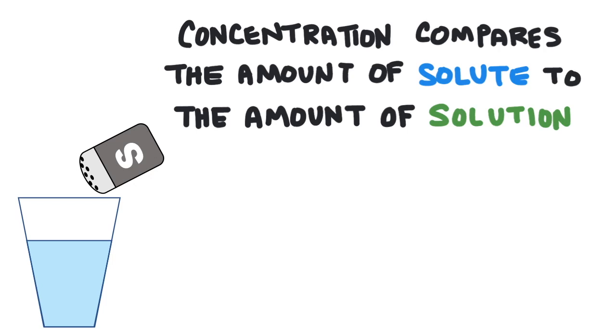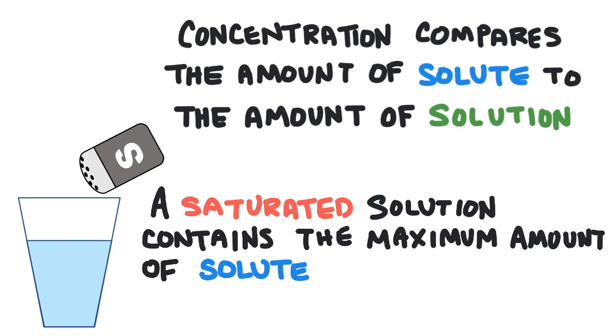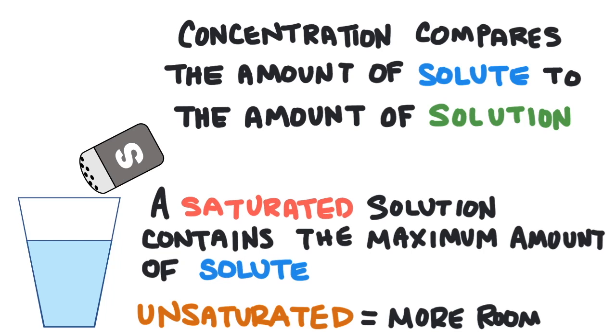A measurement that compares the amount of solute to solution is called concentration. The more concentrated a solution, the more solute particles that are dissolved. There's even a maximum amount of a given solute that can dissolve into a solution. When a solution reaches the maximum allowed dissolved solute, the solution is saturated. An unsaturated solution means there's still room for more solute.